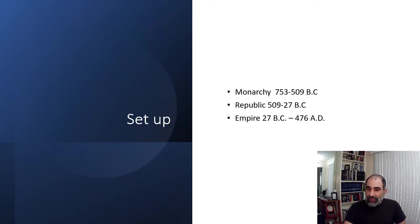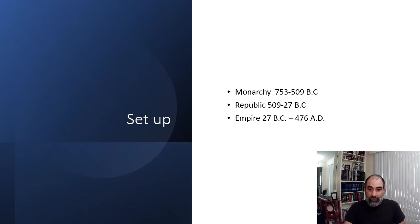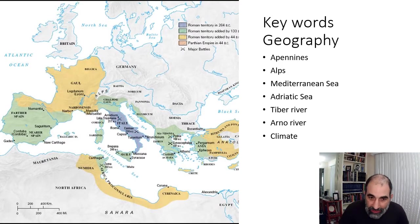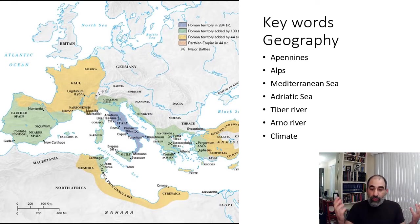The first thing I want to talk about, as I do in many early civilizations, is geography. So let's look at our map and some key words to understand how geography is important to Rome. In terms of the geography, the key things to keep in mind is where Rome is located — right in the center of Italy, or pretty close to the center of Italy.